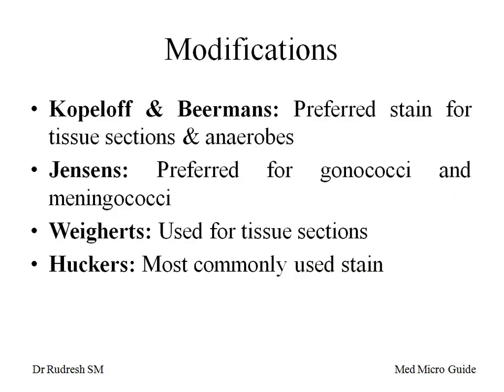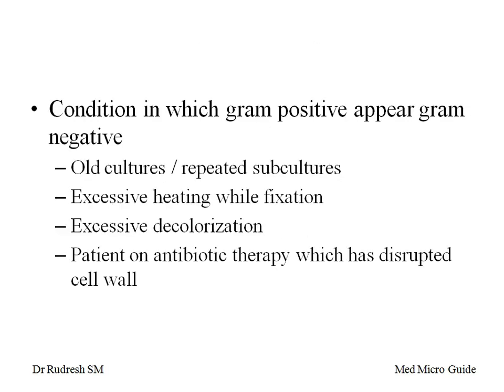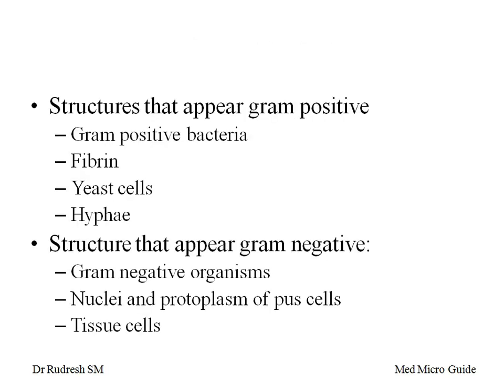Here are some modifications of Gram staining: Kopeloff and Beerman's modification is the preferred stain for tissue sections and anaerobes; Jensen's modification is preferred for gonococci and meningococci; Weigert's modification is again used for tissue sections; Hucker's modification is the most commonly used staining method in laboratories. Conditions in which gram positive organisms appear gram negative include old cultures or repeated subcultures, excessive heating during fixation, excessive decolorization, and patient on antibiotic therapy that has disrupted the cell wall, such as beta-lactam antibiotics.